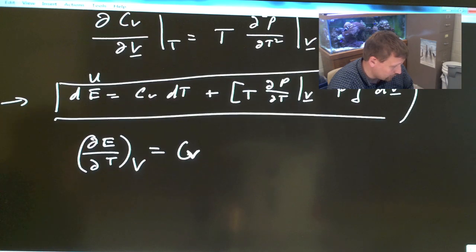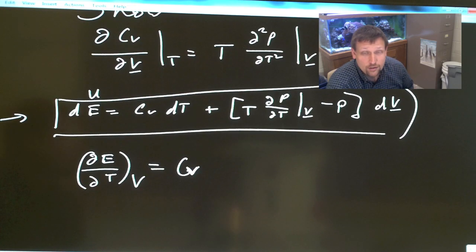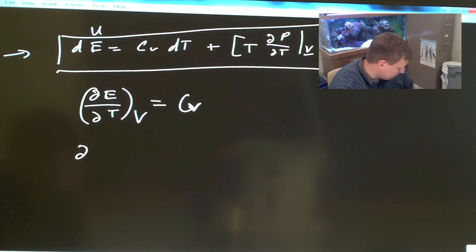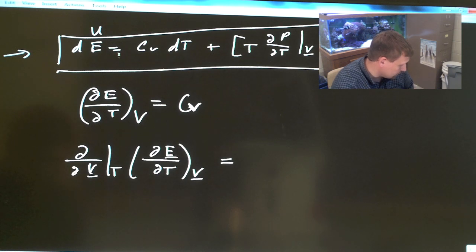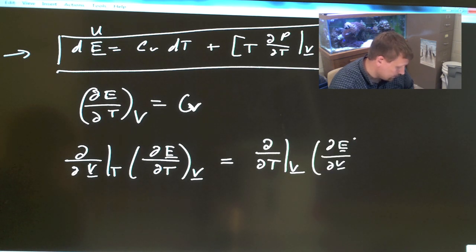Let's start by just doing this simple commutative property that you can do with multivariable functions. And so, what we can do is that the following must be true according to the commutative property of taking the second derivative of a function. Partial by partial V with respect to constant temperature times partial E with respect to temperature constant volume must be equal to partial by partial T, we're just going to switch the order here in which we do the differentiation, at constant volume del E del V constant temperature.